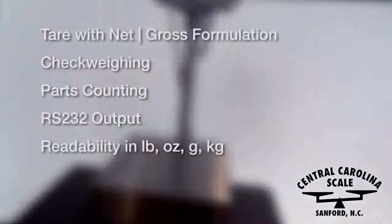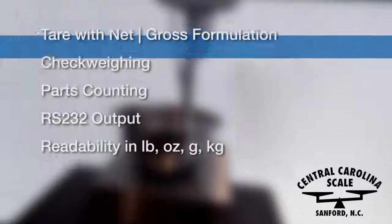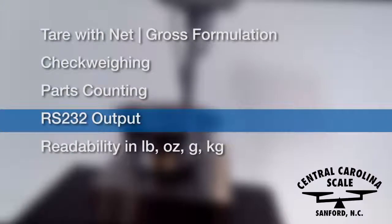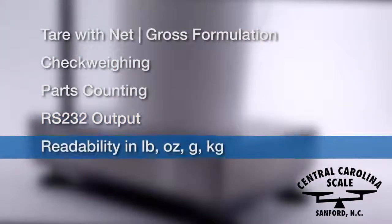The Mirus II offers a tare function with gross and net weight display for formulation, check weighing, parts counting, RS-232 output for printers or data collection in your computer, and all models can display in pounds, ounces, grams, or kilograms.